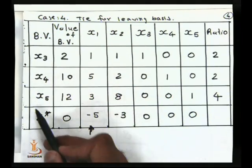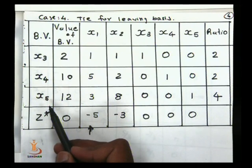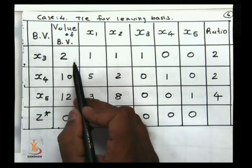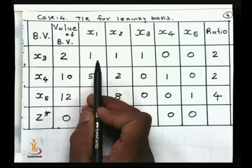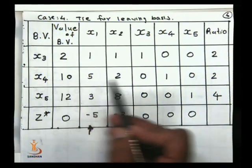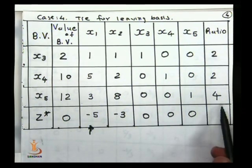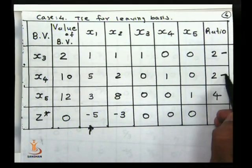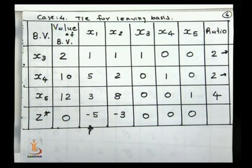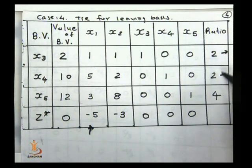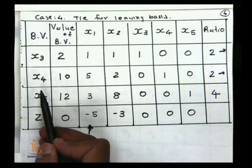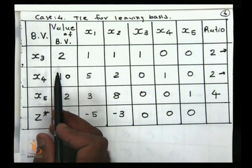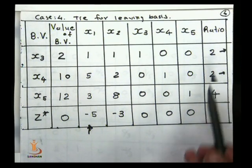Now we need to remove a variable from x3, x4, and x5. For that we are finding the ratio - 2 upon 1 equals 2, 10 upon 5 equals 2, 12 upon 3 equals 4. We are getting these three ratios: 2, 2, and 4. You see both 2s are smallest and both are positive smallest ratios, so there is a tie between the corresponding variables x3 and x4.